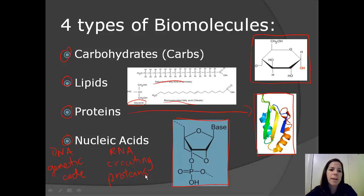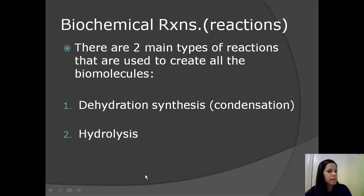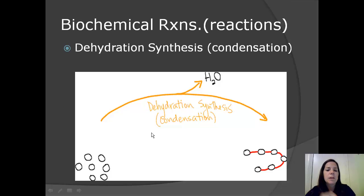So that outlines the four types of biomolecules. Let's take a quick look at some of the biochemical reactions that happen in the body. So the first one that I want to go over with you. Well, there's two types. There's dehydration synthesis and hydrolysis. Let's begin with dehydration synthesis. So again, synthesis refers to making or creating something. As we look at this diagram here, down here, all these little bits here represent monomers.